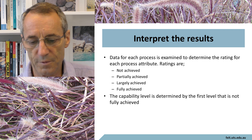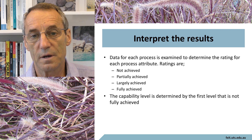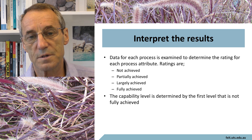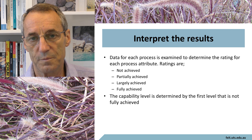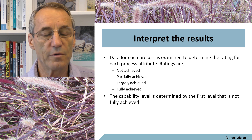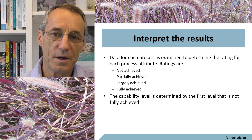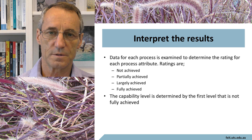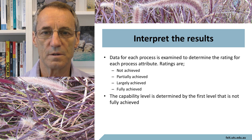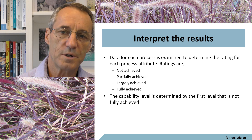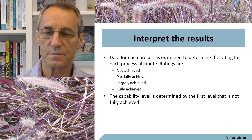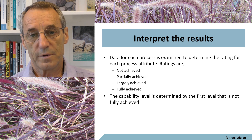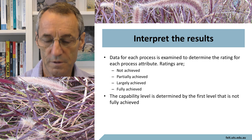Data for each process are examined to determine the rating for each process attribute. The ratings are: not achieved, partially achieved, largely achieved, or fully achieved. Fully achieved means everything intended for that outcome is being achieved. Not achieved means there is no evidence of it at all. Largely achieved means what was supposed to be produced is largely right, but there are minor faults that could be removed with minor correction. Partially achieved means something is being produced, but there are fundamental flaws that won't be fixed with a simple change. The capability level is determined by examining how many outcomes are achieved and to what degree.